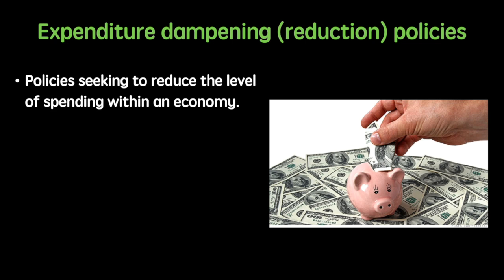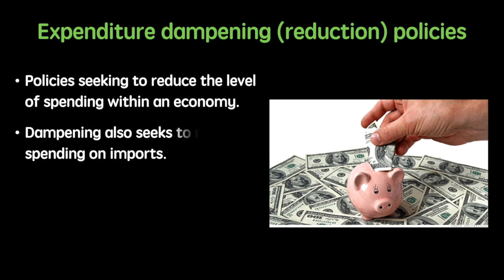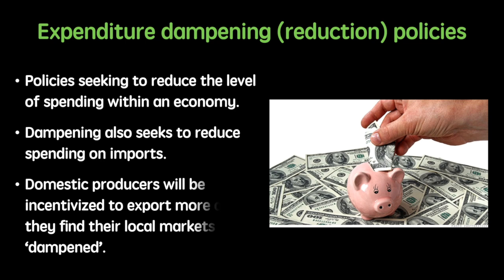Expenditure dampening or reduction policies are policies seeking to reduce the level of spending within an economy. Dampening not only tries to reduce spending levels but also aims to reduce spending on imports. This should incentivise domestic producers to export more as they find their local markets dampened.